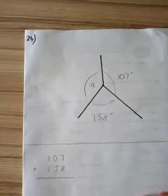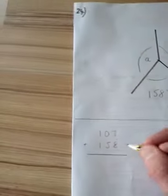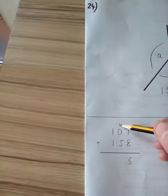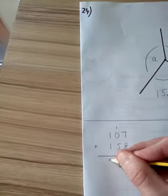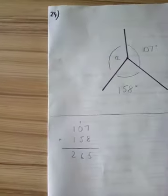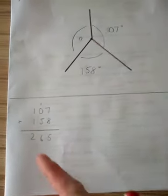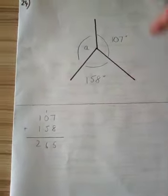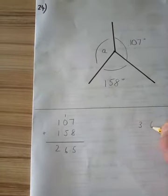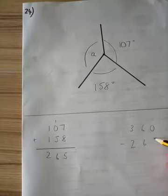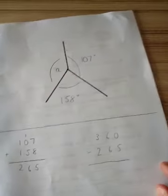Well, if we add these two up: 107 and 158. 7 add 8 is 15, carry 1. 1 and 5 is 6, and 1 and 1 is 2. So we know those two angles equal 265 degrees. Well, to find the missing angle we just need to take that away from the whole thing, which is 360. So in order to answer this question, once we've added up the two angles we've been given, we can subtract that 265 from 360.